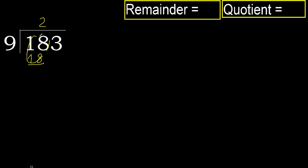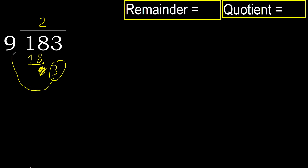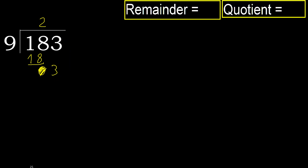18 minus 18 equals 0. Next, bring down 3. 3 is less than 9, therefore there is no next number.